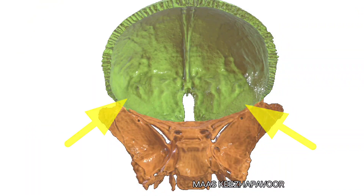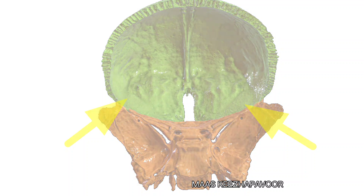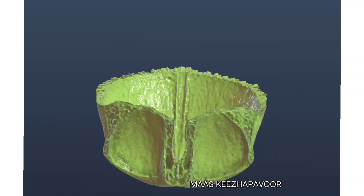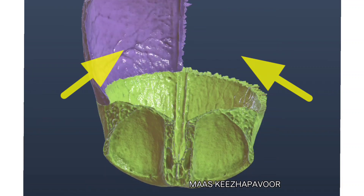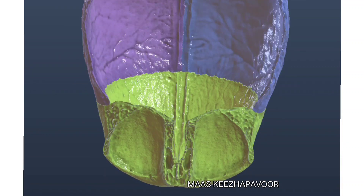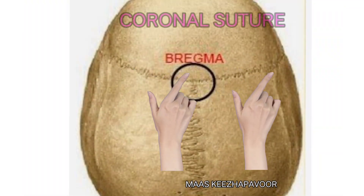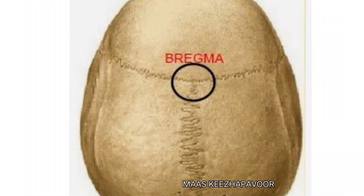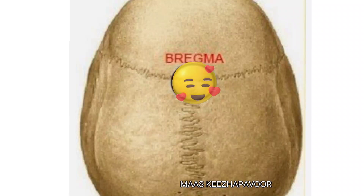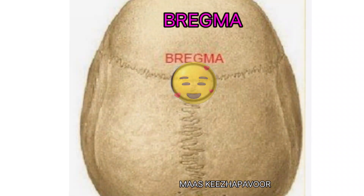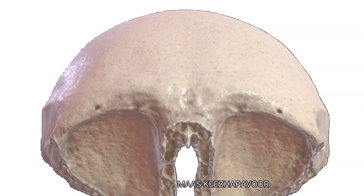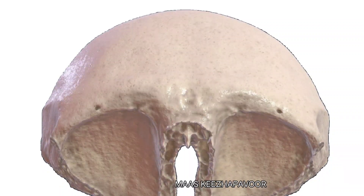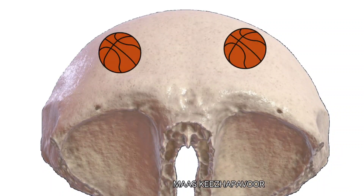The borders of the squamous part are two sphenoidal borders and one parietal border. The sphenoidal borders articulate with the greater wing of sphenoid. The parietal border articulates with parietal bones and forms the coronal suture. The meeting point of frontal and parietal bones is the bregma.